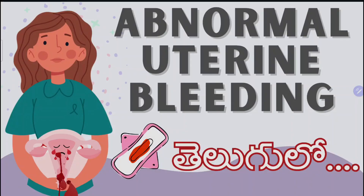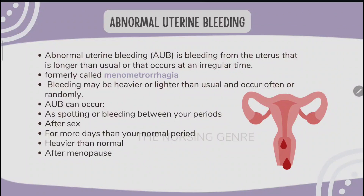Hello all, welcome back to the Nursing Zone YouTube channel. In this video, we discuss abnormal uterine bleeding. Uterine bleeding is nothing but women's period. What is abnormal uterine bleeding? Abnormal uterine bleeding is bleeding from the uterus that is longer than usual. In normal periods there is heavier bleeding or it is set at irregular time — irregular time meaning a period without a regular schedule.